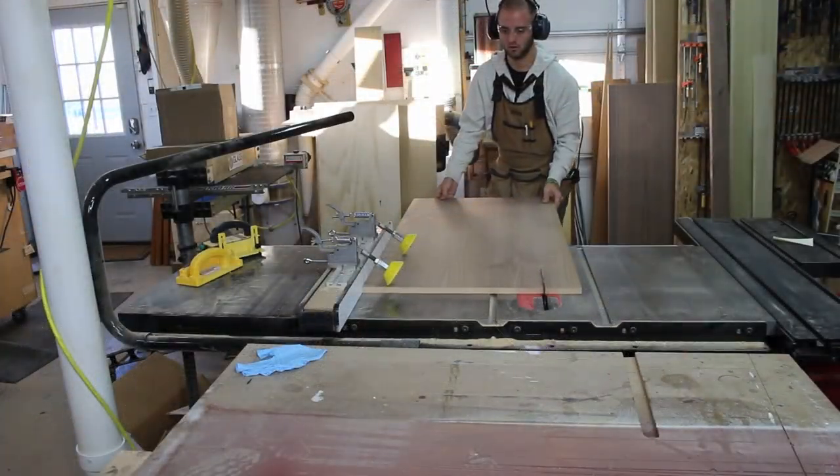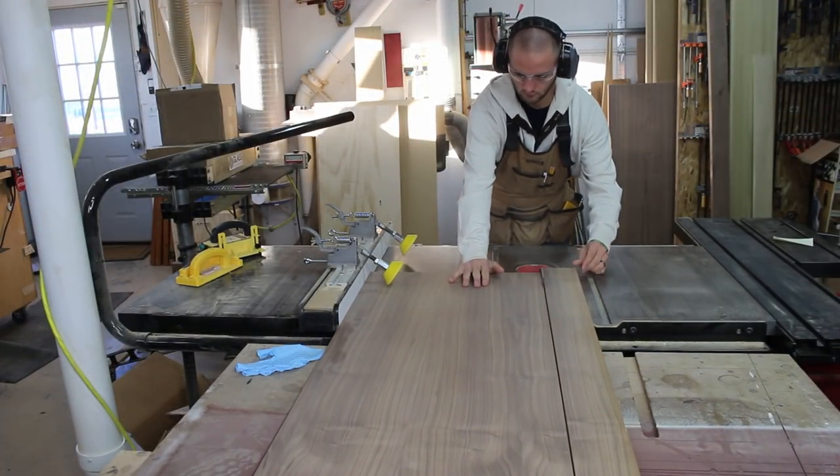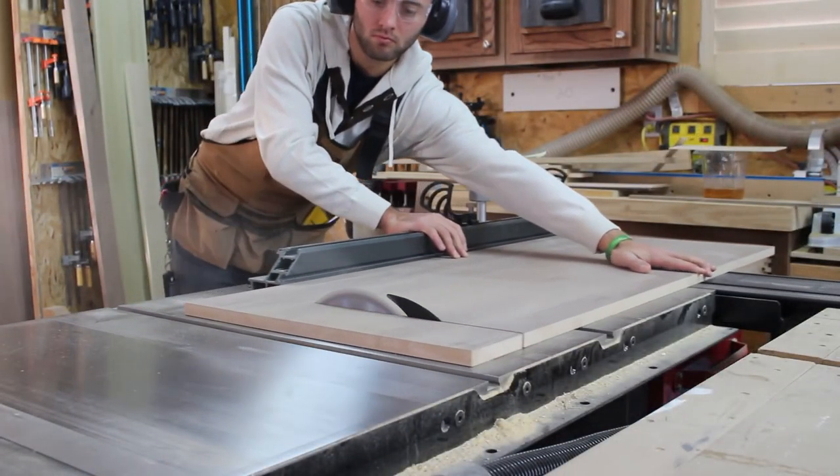I used the same cutting procedure with the name section as we did with the map portion earlier. I cut it to width at the table saw and then used the sliding accessory on my table saw to cut it to length.